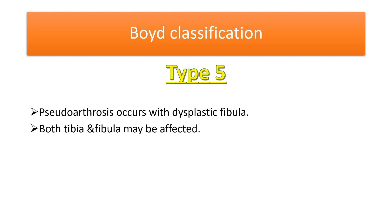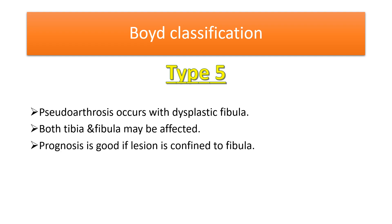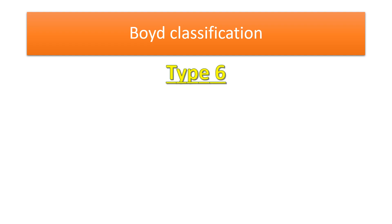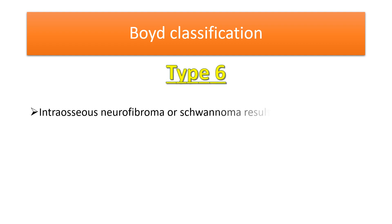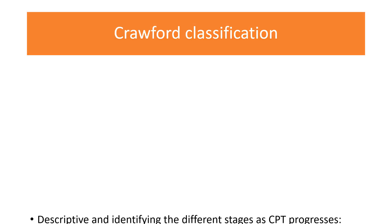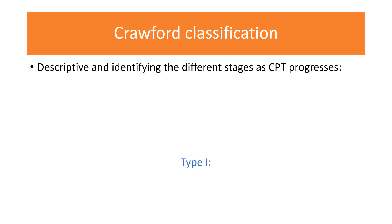In Boyd's Type 5, pseudarthrosis occurs with dysplastic fibula and both tibia and fibula may be affected; the prognosis is good if the lesion is confined to the fibula. In Boyd's Type 6, pseudarthrosis arises from intraosseous neurofibroma or schwannoma.